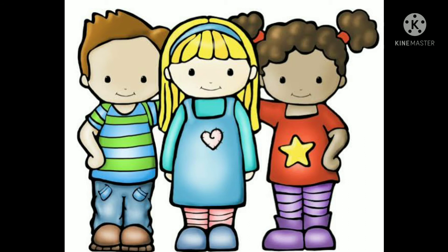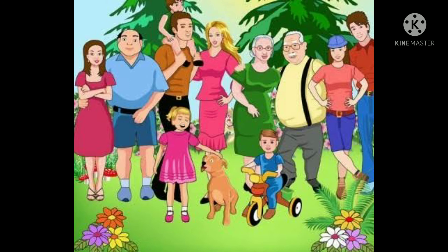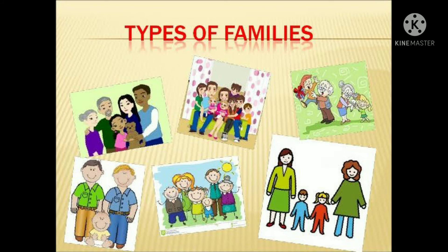Neha then narrated about Tanya's family, who lives around the corner. Tanya lives in a very big family with all her grandparents, uncle, aunt, cousins, and parents — so Tanya belongs to a joint family. Roshan and Neha came to the conclusion that family is all about loving, sharing, and caring for each other, whether it may be big or small, happy or sad.